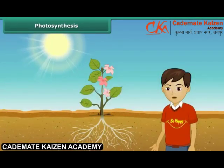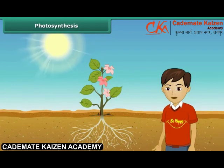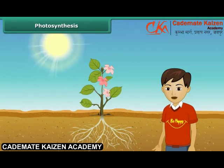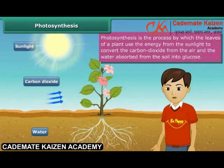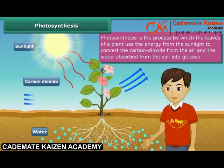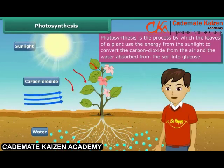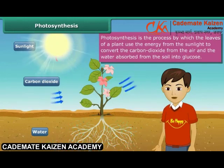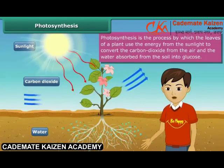Like animals and human beings, plants also require food for their survival. However, unlike animals and human beings, they can make their own food by the process of photosynthesis. This process takes place in the leaves of the plant. In this process, the leaves use energy from the sunlight to convert the carbon dioxide absorbed from the air and the water absorbed from the soil into glucose. The food prepared by the leaves is then transported to the different parts of the plant.